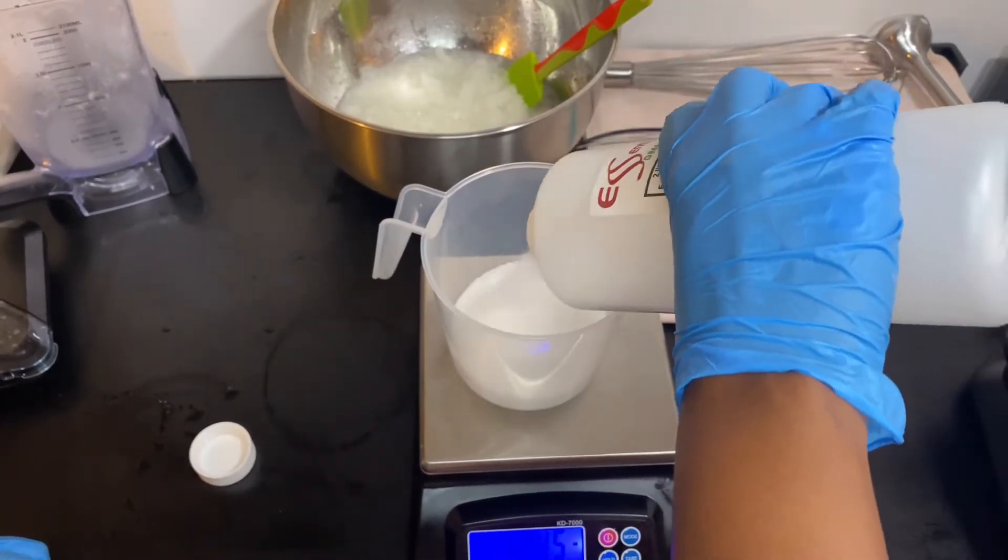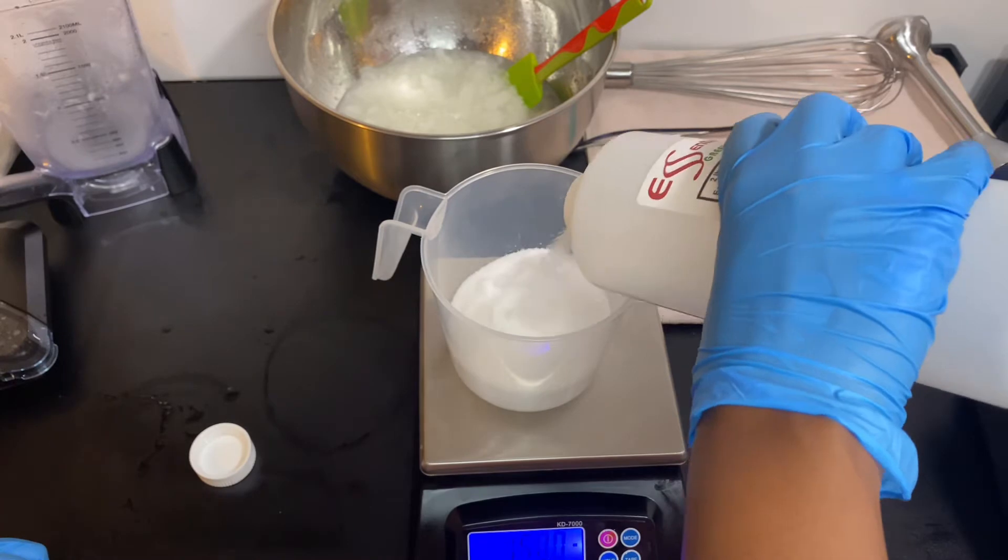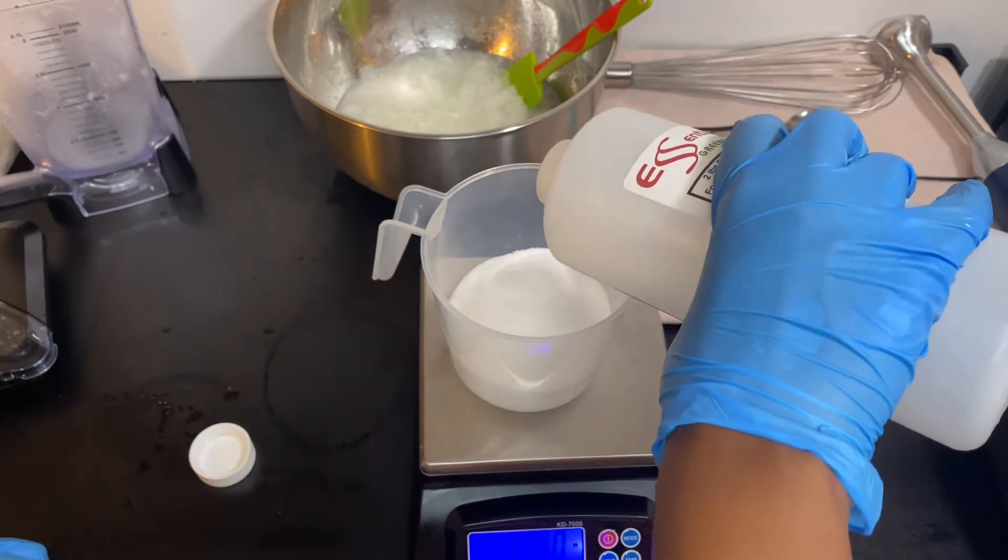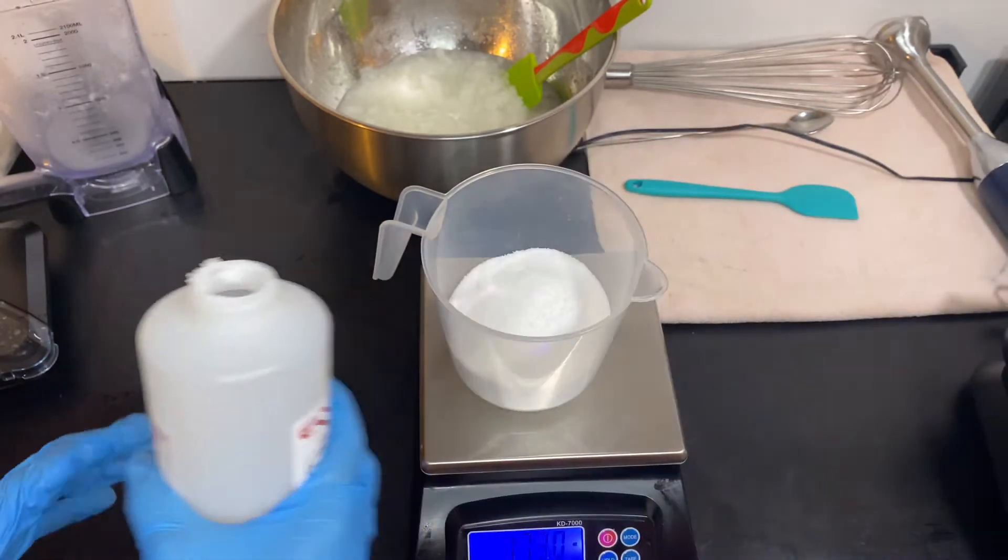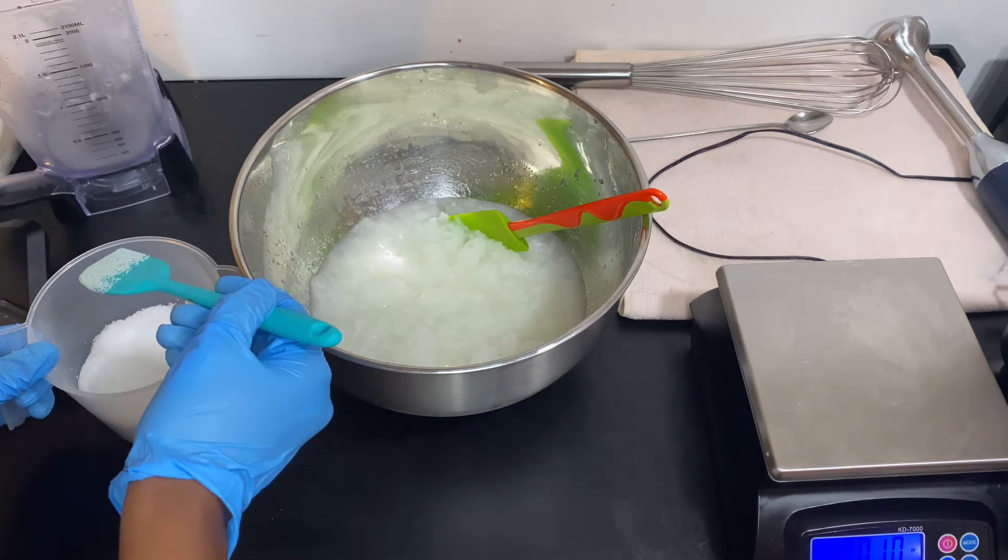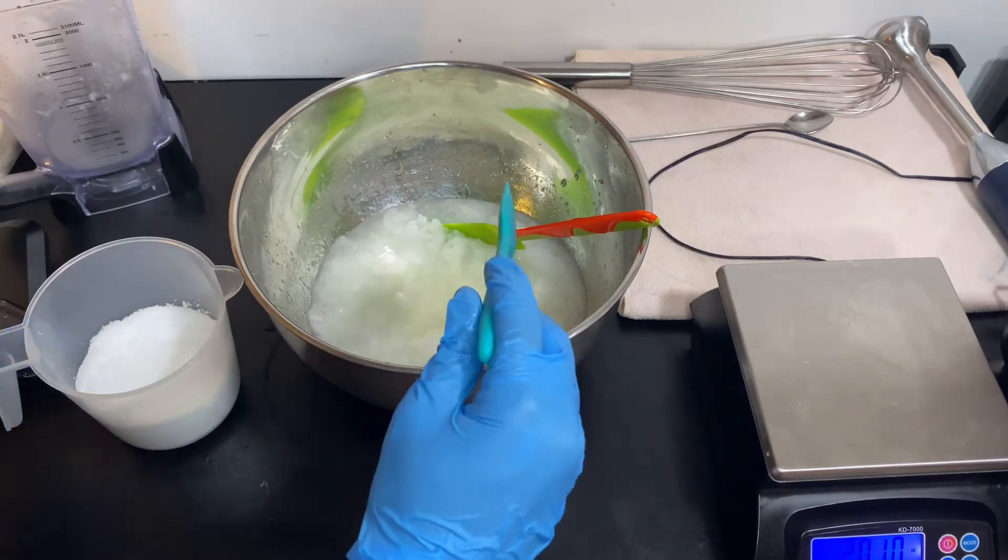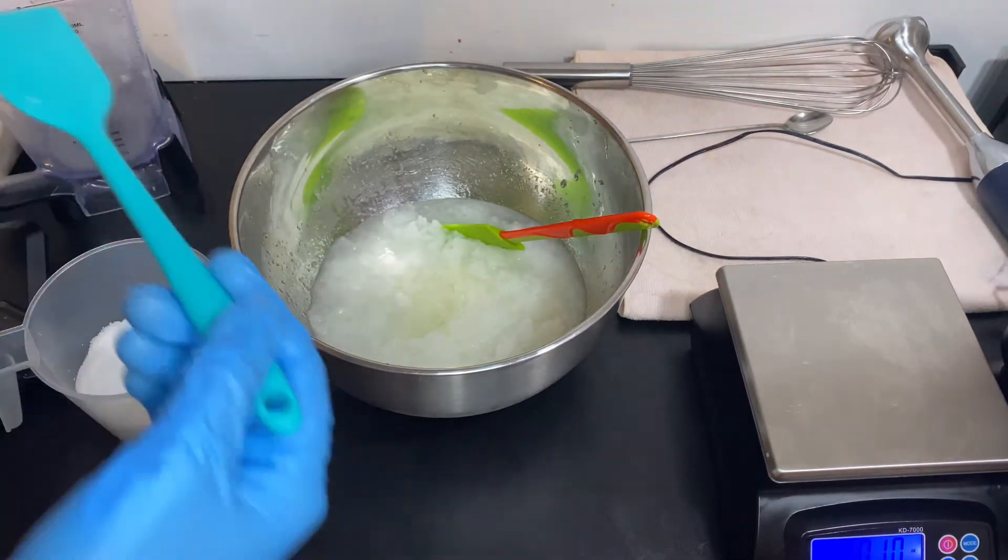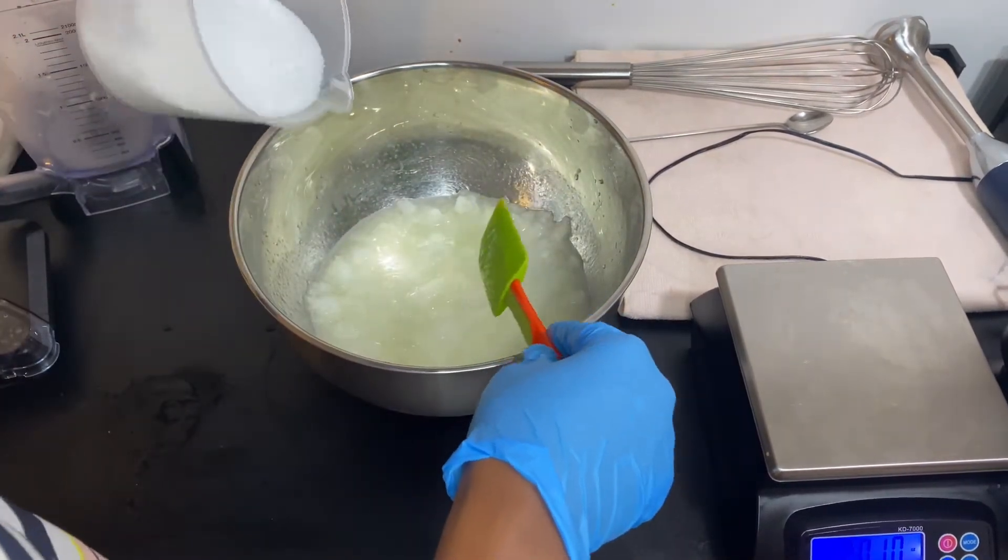So we're measuring out our lye into another container, and then we're going to slowly pour our lye into our aloe vera mixture. As you can see, it still looks chunky but that's just ice - it's not actual aloe vera chunks. You don't want those in your soap.